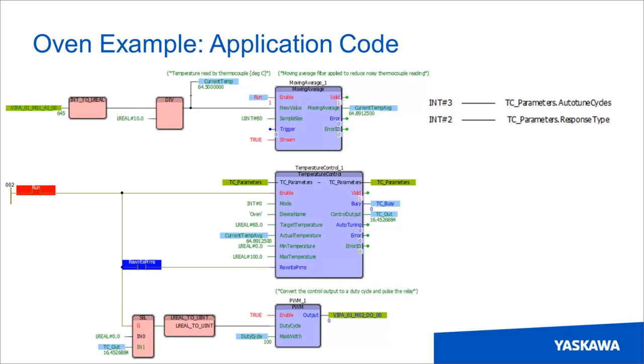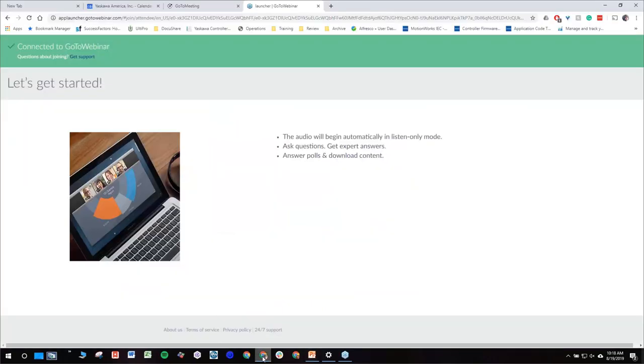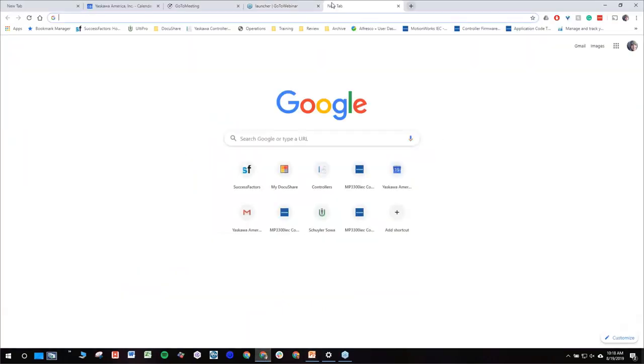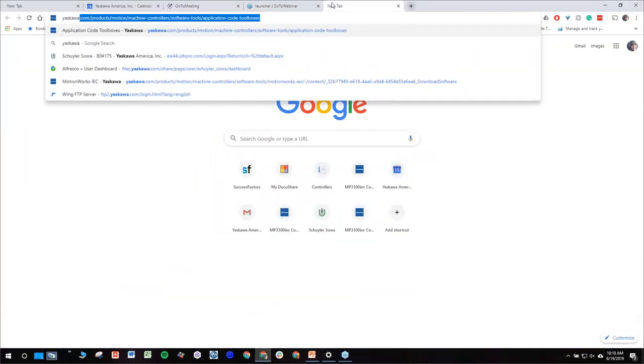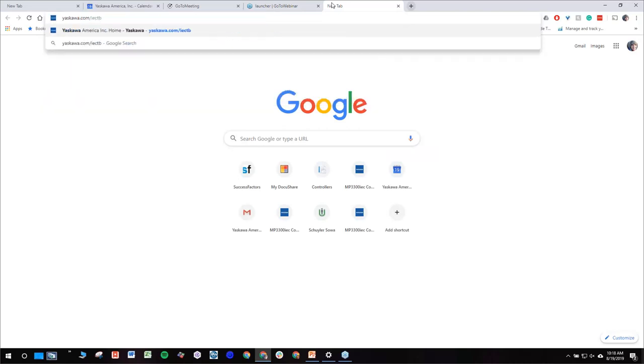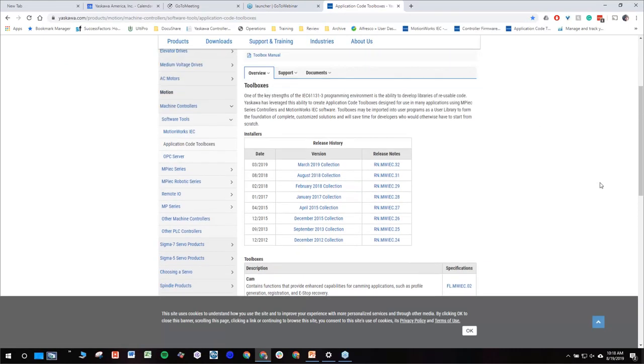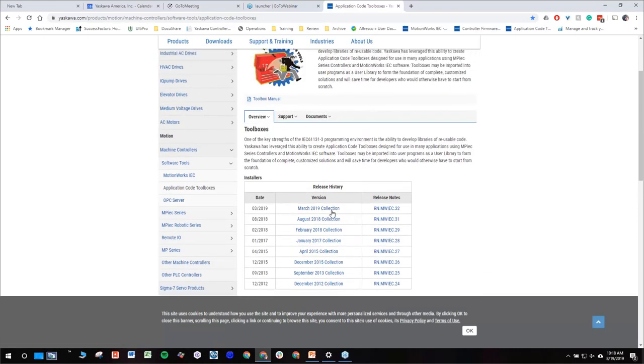And I'll show you where to get this from the website. So if you go to yaskawa.com/ICTB, that should take you to the application code toolboxes and you can install the latest collection from March of this year. Alright, if there are no more questions, then I guess thank you everyone for attending and I hope you all have a great day.